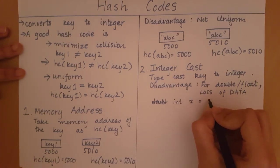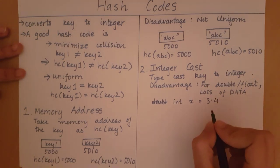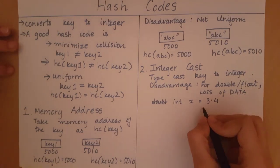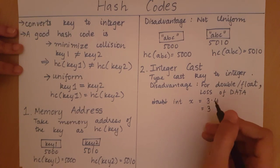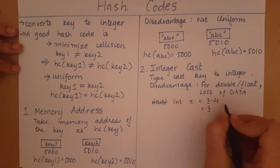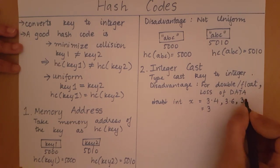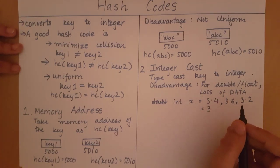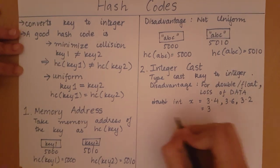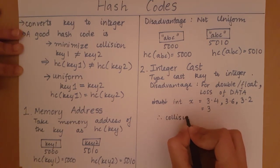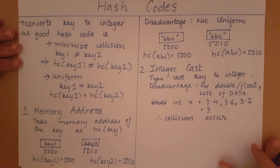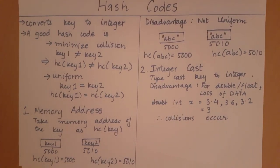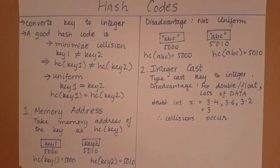For example, taking the integer value of the double 3.4 gives 3 — the floor value. If I have many keys like 3.4, 3.6, and 3.2, all of these map to the same integer 3. There is a loss of data accuracy, and as a result many collisions will occur. Since this method does not minimize collisions, integer casting is not a good choice for a hash code.